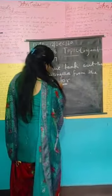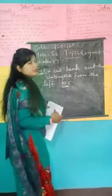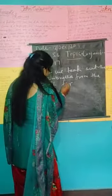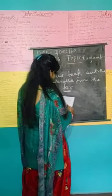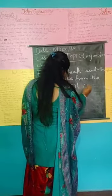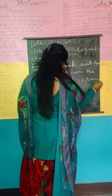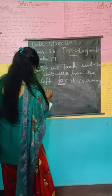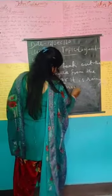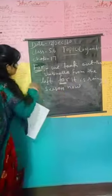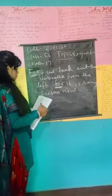Conjunction is joining two words, phrases, clauses, sentences. Talking about 'for' — for is joining two sentences. It is rainy season. We took out the umbrella. So 'for' is joining two sentences. Let's see the next example.